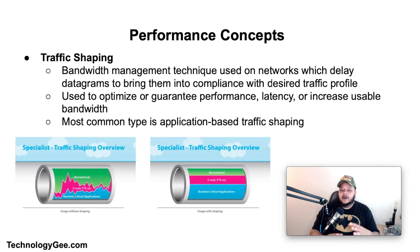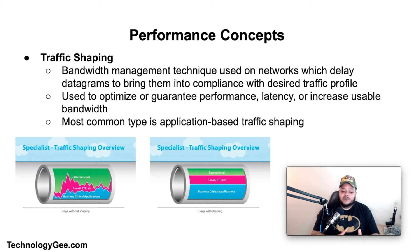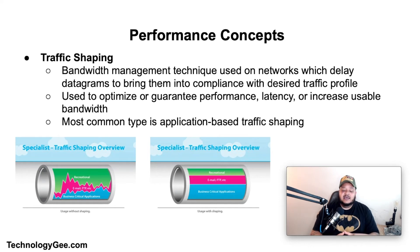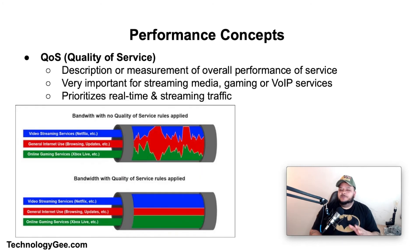Now let's talk about performance concepts, starting with traffic shaping. Traffic shaping is a bandwidth management technique that delays some or all datagrams to bring them into compliance with a desired traffic profile. It is used to optimize or guarantee performance, improve latency, or increase usable bandwidth for certain packets by delaying others. It is often confused with traffic policing, which involves packet dropping and marking. The most common type is application-based traffic shaping, which fingerprints traffic to identify the application and applies specific policies — for example, throttling peer-to-peer file sharing while giving maximum bandwidth to a business-critical application like VoIP.